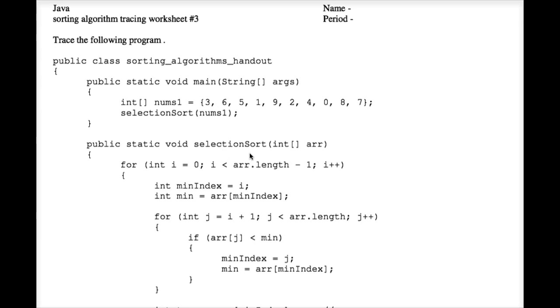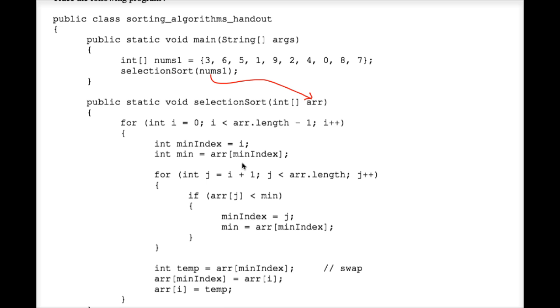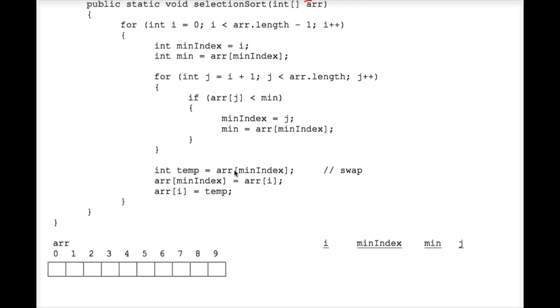Tracing a selection sort algorithm in Java. Checking out this main method, we have an array with the values 3, 6, 5, 1, etc. stored there and we're simply calling this static method selection sort and we're passing the array as a parameter to that method. I'm keeping track of everything down here.